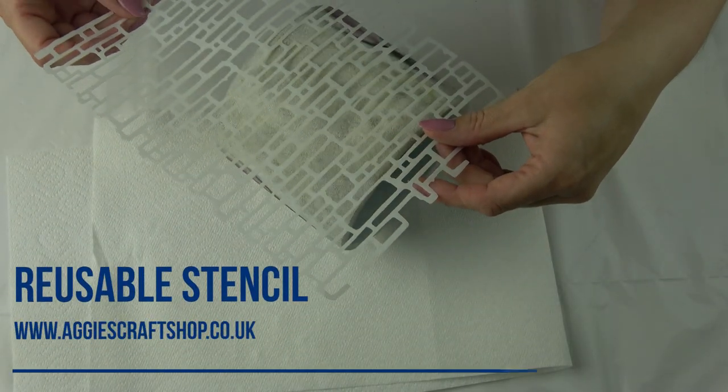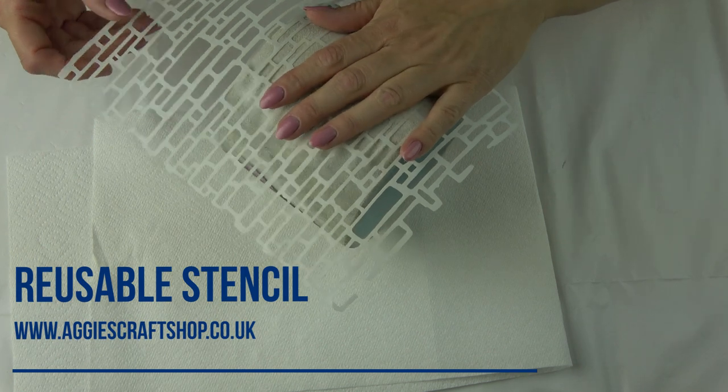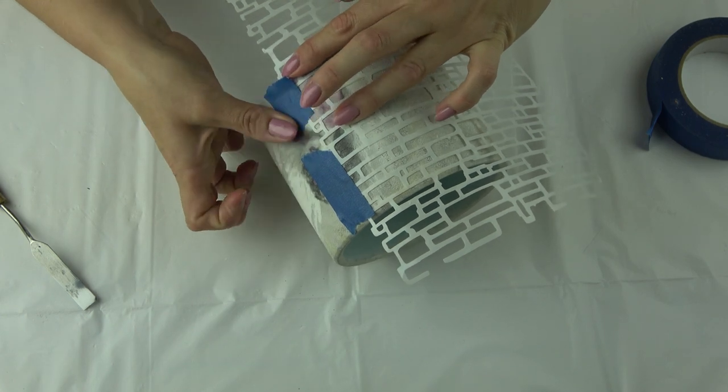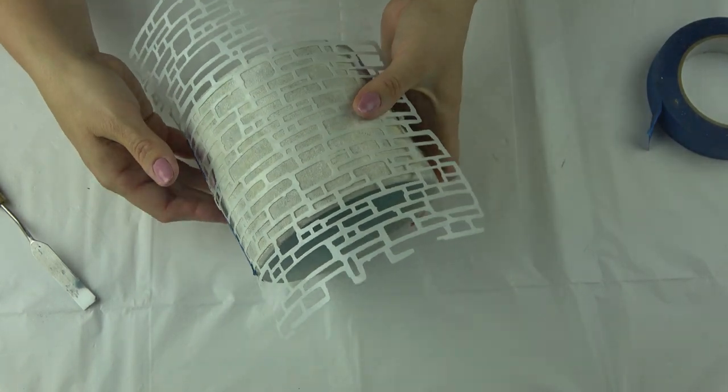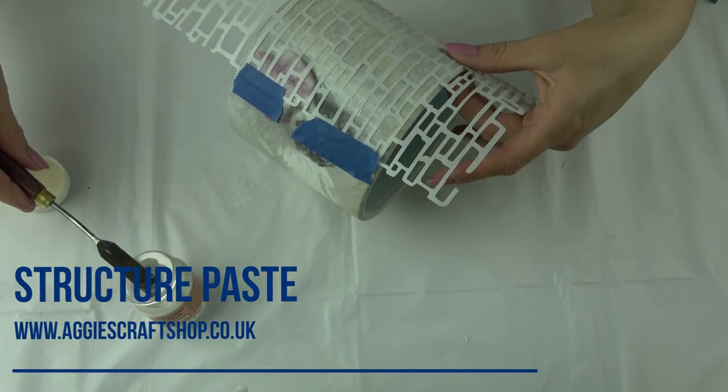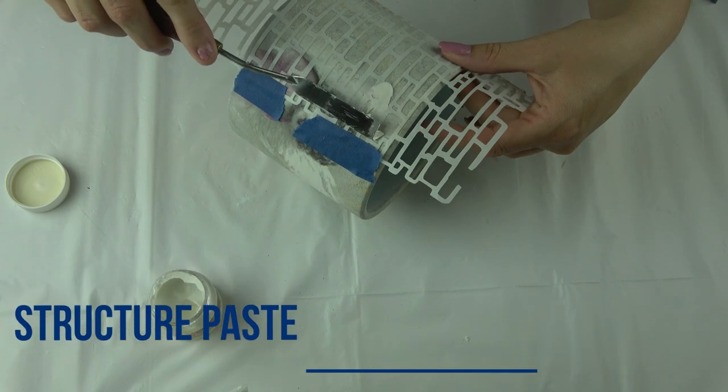Once I'm happy with the finish, I use stencil with bricks and structure paste to add more details. I don't want my bricks to be perfect, so I apply paste randomly around the stencil. It doesn't matter that paste is not even, we can sort this out later.